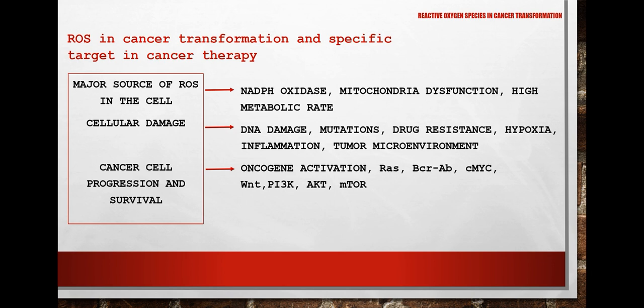For cancer cell progression and survival, key oncogenic activations involve the AKT, MYC, PI3K, and mTOR signaling pathways.